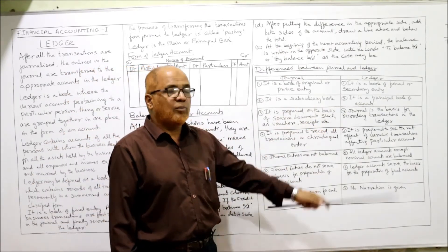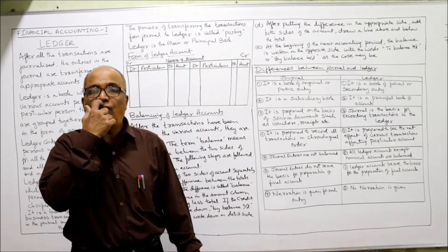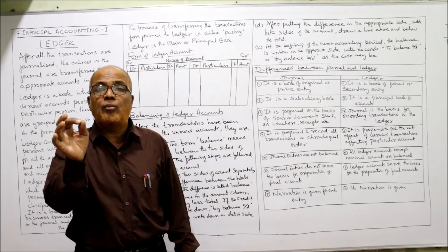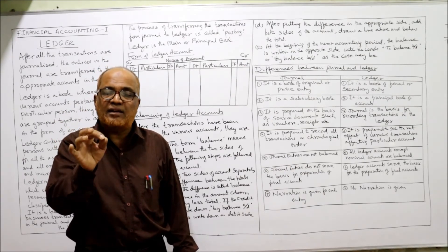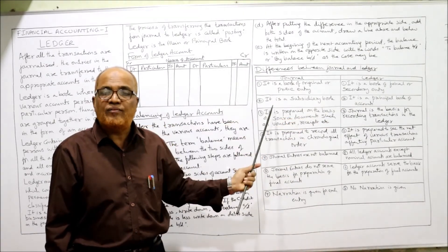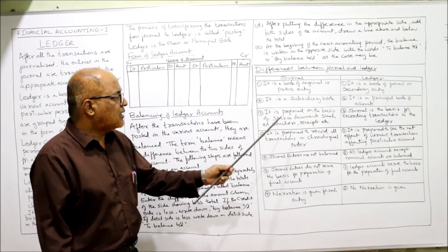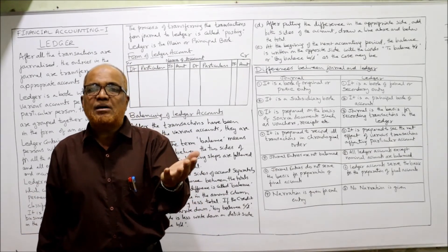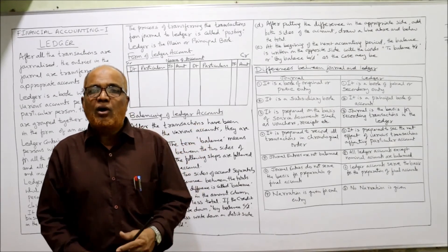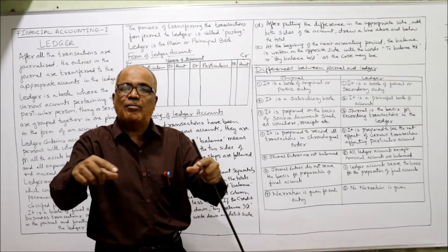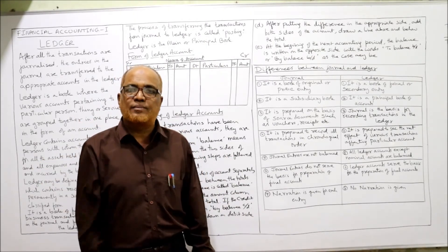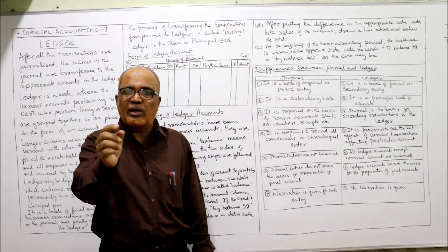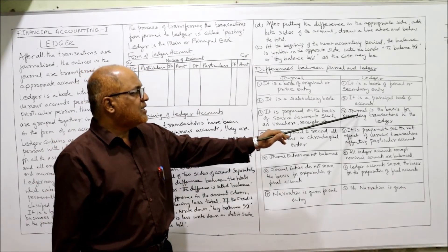Journal is a subsidiary book whereas ledger is the principal book of accounts. We prepare the trial balance and financial statements from ledger, not from journal. Also, journal is prepared on the basis of source documents like vouchers, receipts, and agreements — there must be supporting evidence for every transaction recorded in journal.